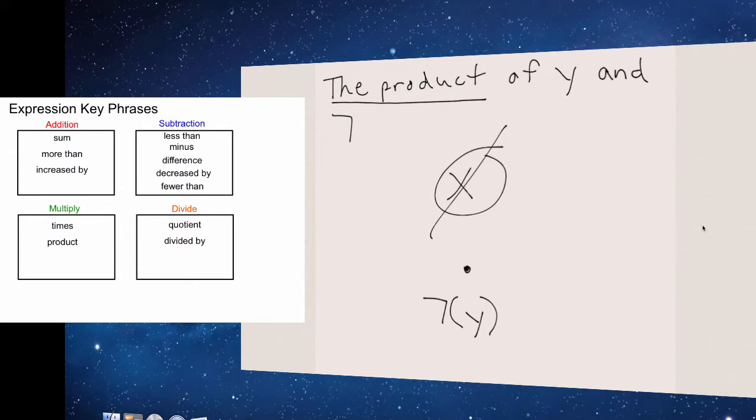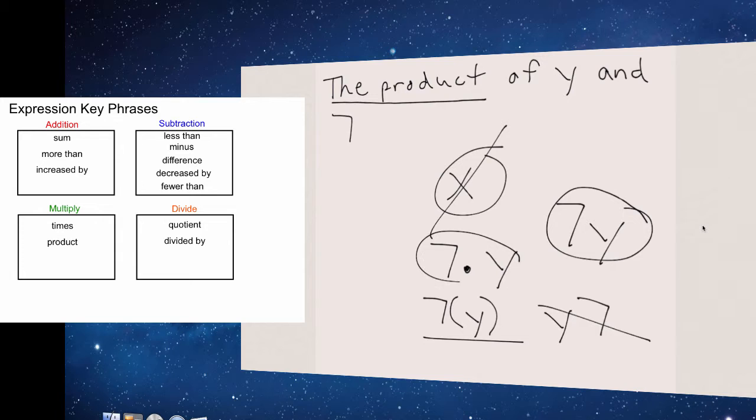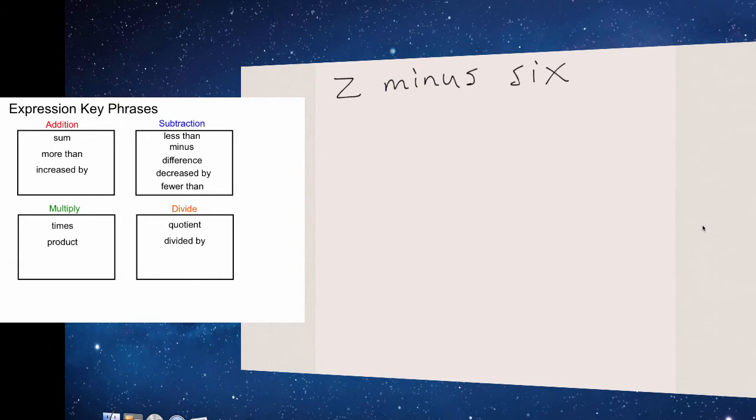One thing you should know is when we are showing multiplication, we usually like to put the number in front of the variable, instead of having the variable in front of the number. It's just common for people to write the number first. Another way we could have written that is 7 dot Y. Or the third way, we could have just said 7Y. All of these were correct.